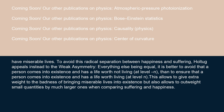To avoid this radical separation between happiness and suffering, Holtug appeals instead to the weak asymmetry: everything else being equal, it is better to avoid that a person comes into existence and has a life worth not living at level N, than to ensure that a person comes into existence and has a life worth living at level N. This allows giving extra weight to the badness of bringing miserable lives into existence, but also allows small quantities of suffering to be outweighed by much larger ones when comparing suffering and happiness.